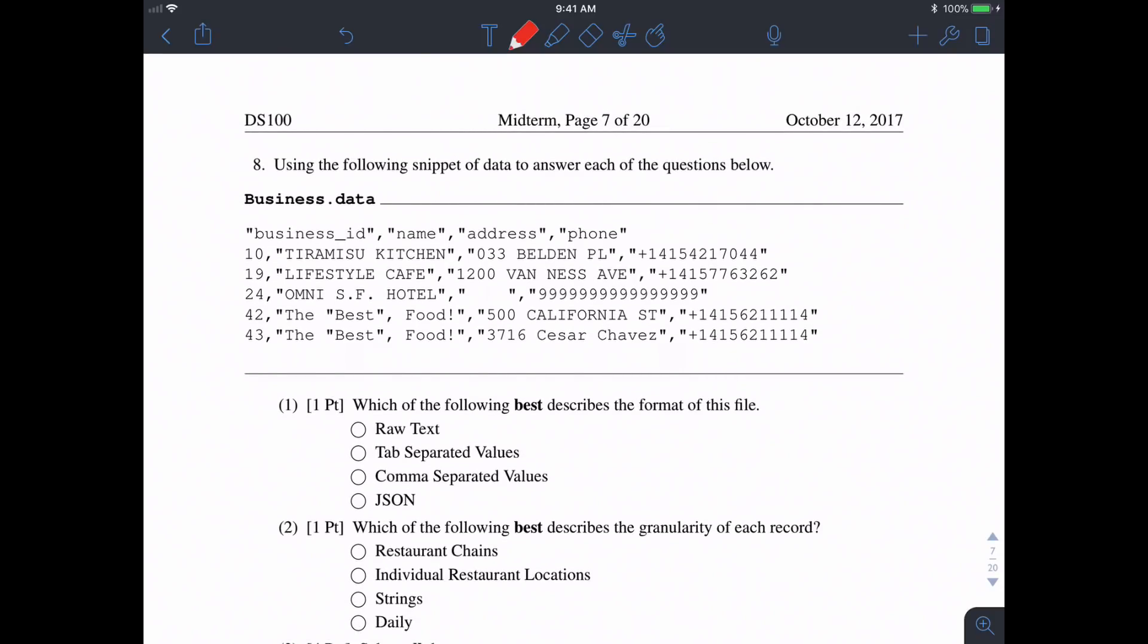In number eight, we're given the following snippet of data and need to answer questions about it. Part 1: Which of the following best describes the format—raw text, tab-separated values, comma-separated values, or JSON? This one looks exactly like a CSV because there are commas separating different entries.